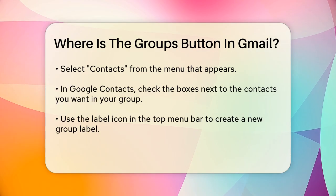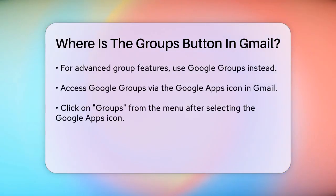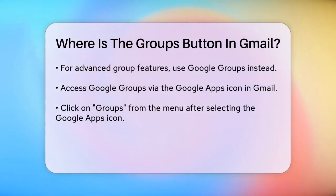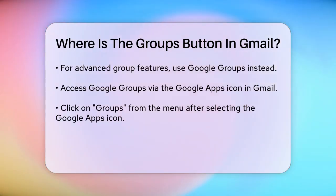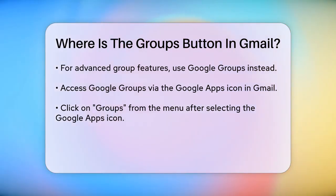However, if you're looking for more advanced group features, you'll want to use Google Groups. To find the groups option, you won't see it directly in Gmail. Instead, navigate to the Google Apps icon in the top right corner of your Gmail interface. Click on this icon and from the menu, select Groups.